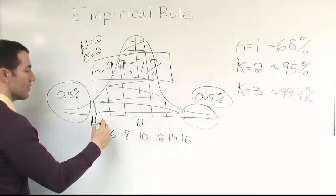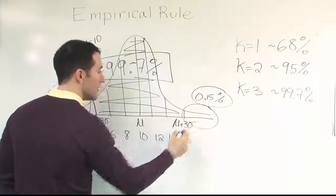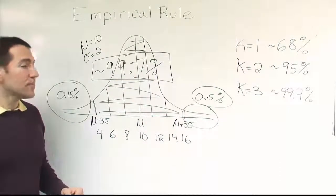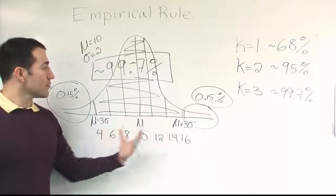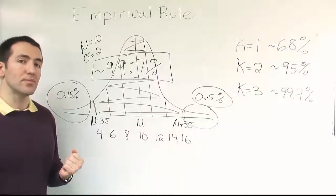That's the mean minus three sigma, the mean plus three sigma. We're going to see in the video examples for problems that relate to this idea that there's many ways we can break this down because of the symmetry. We have more flexibility with this rule than we did with Chebyshev's theorem.